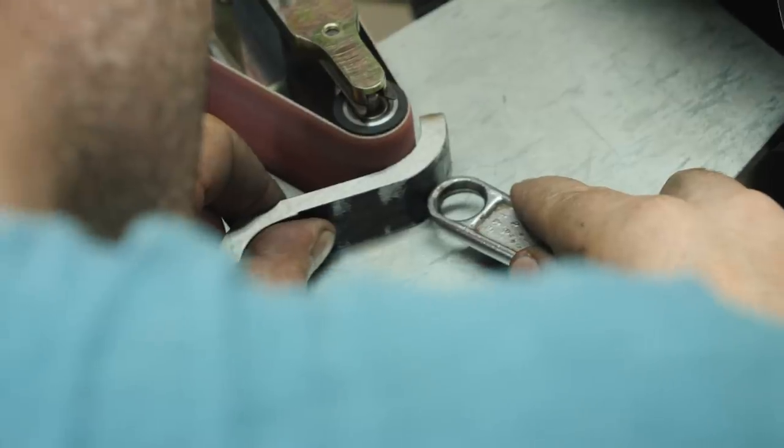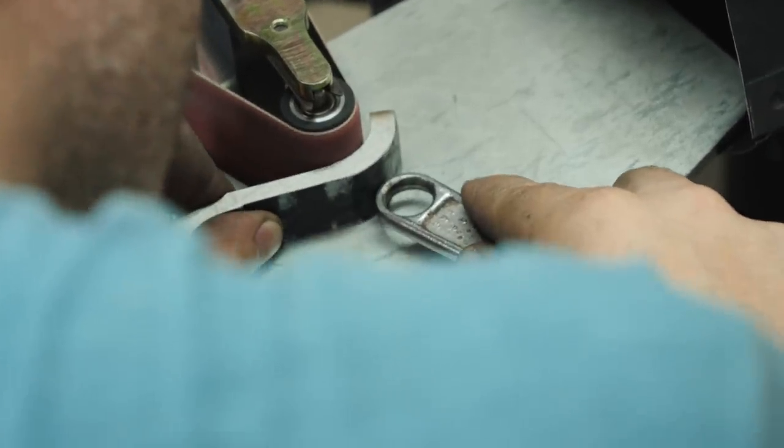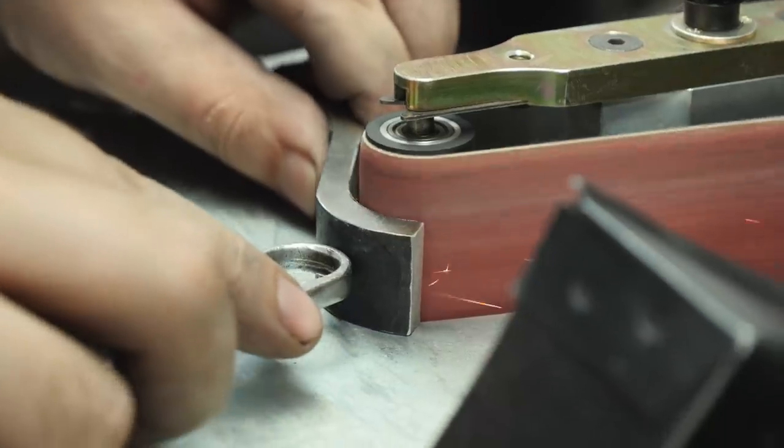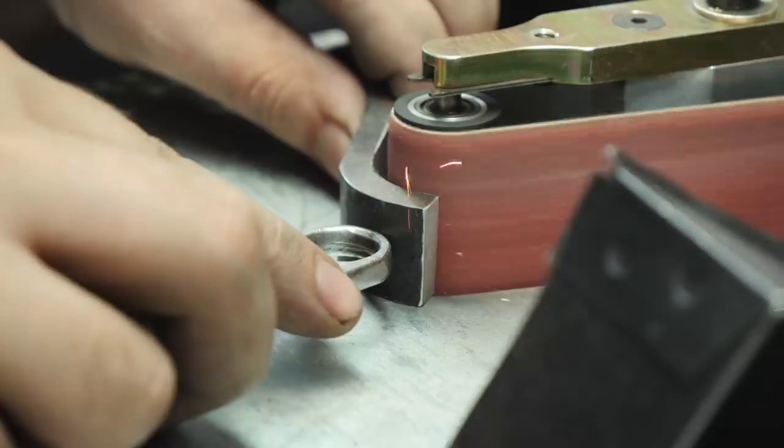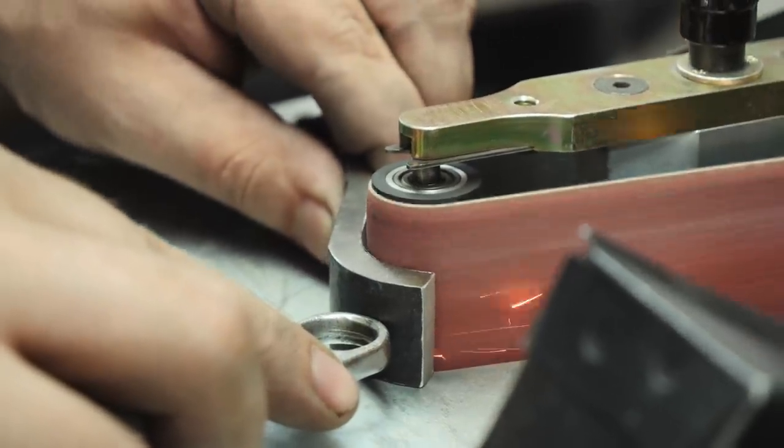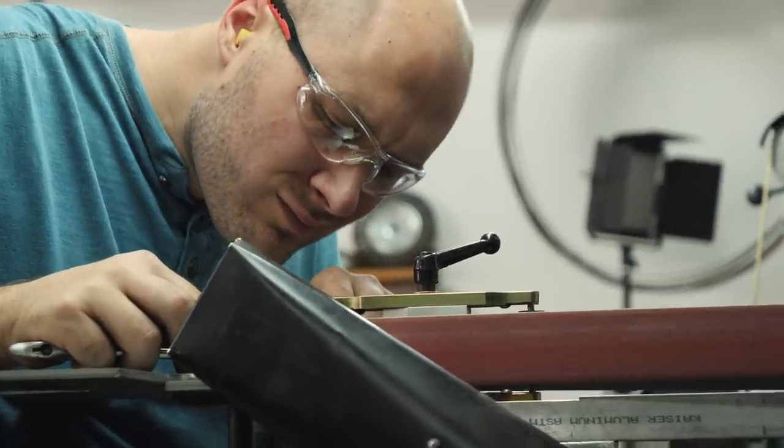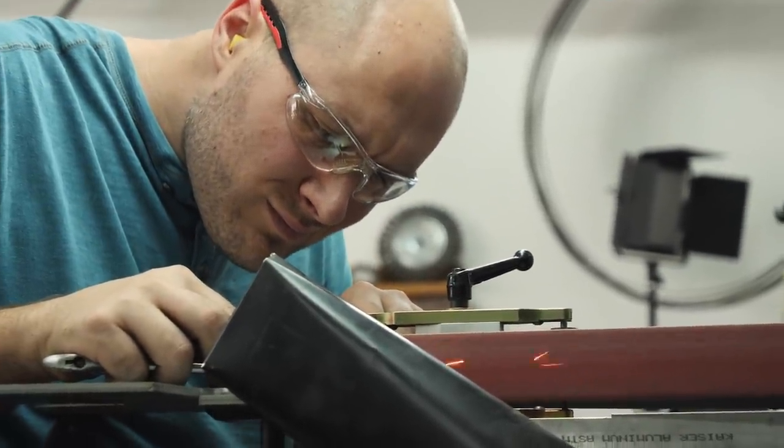Once that's done, I move on to cleaning up the curved areas of the guard on the 2x72 belt grinder. I use the grinder set up horizontally with a work rest, and then I can lay the guard on there nice and flat, and know that I'm grinding everything square in those curved areas.